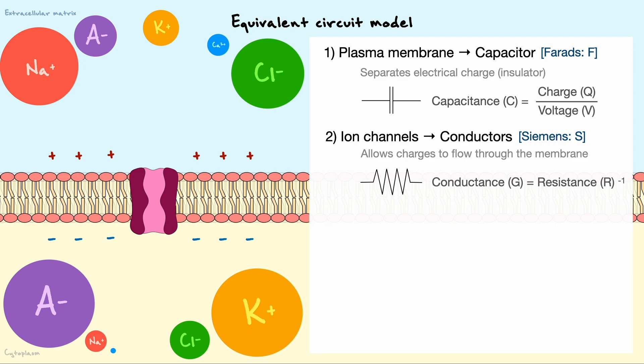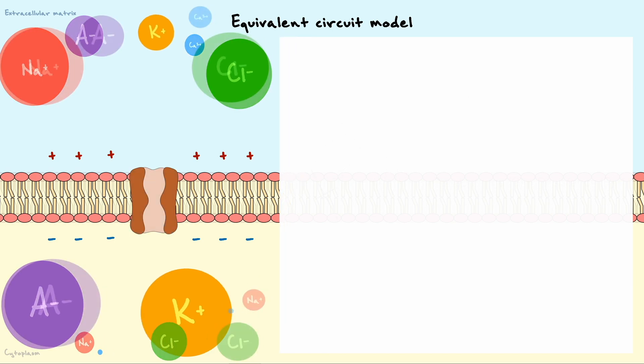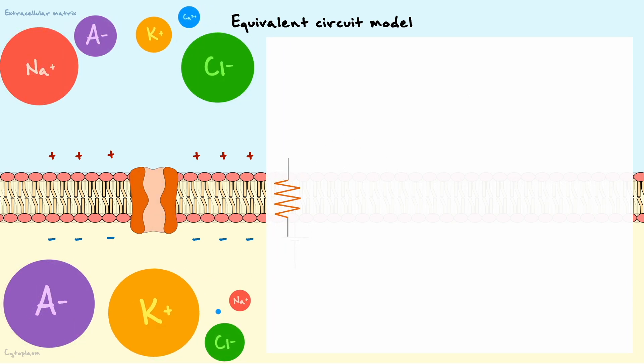The missing component that we need to establish now is what is the battery of our system, or in other words, what is the source of voltage. To exemplify this property, let's consider a small circuit for one potassium channel.